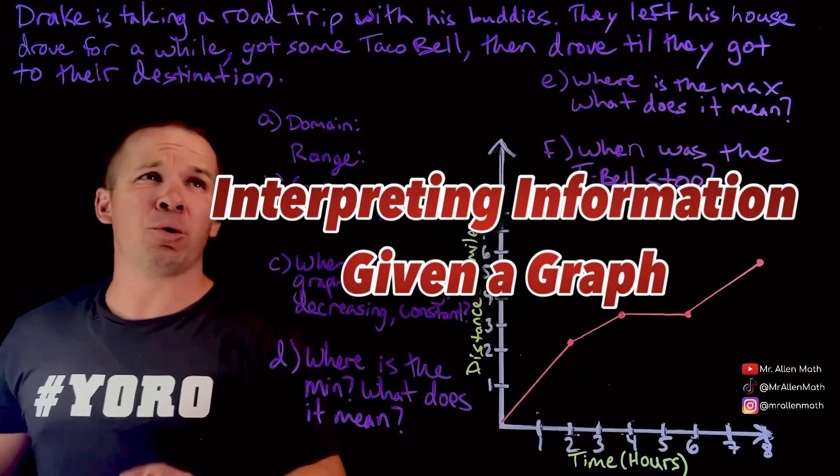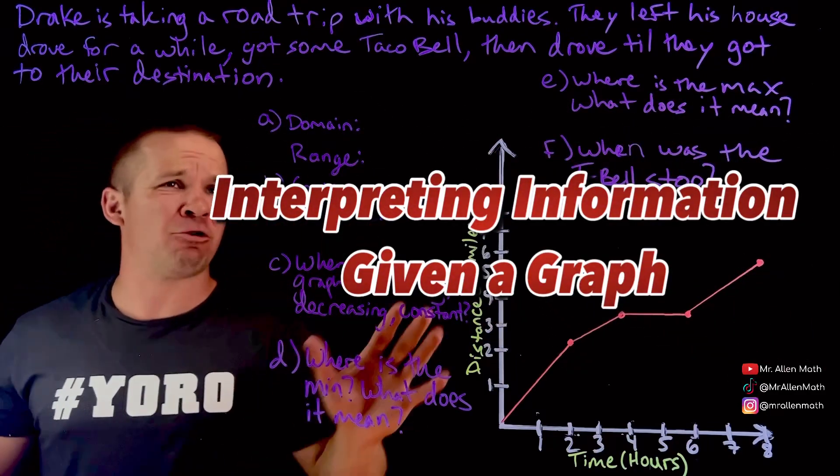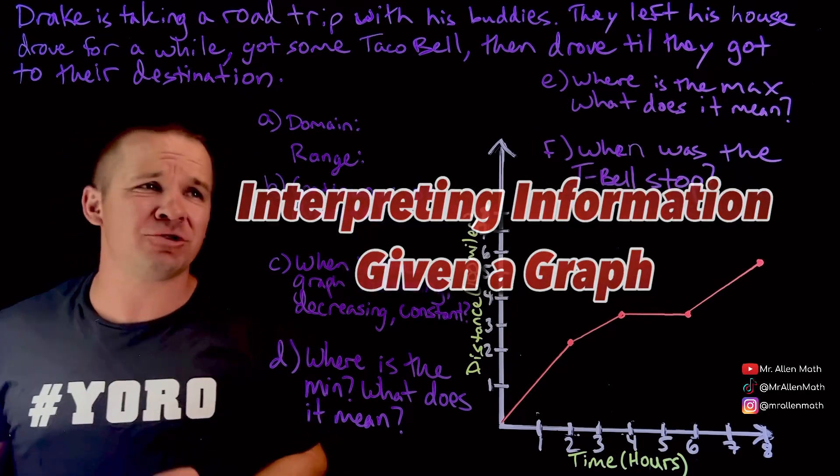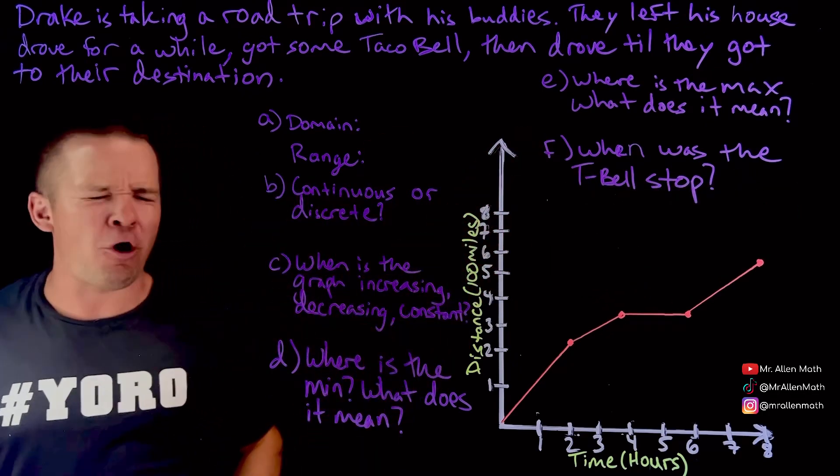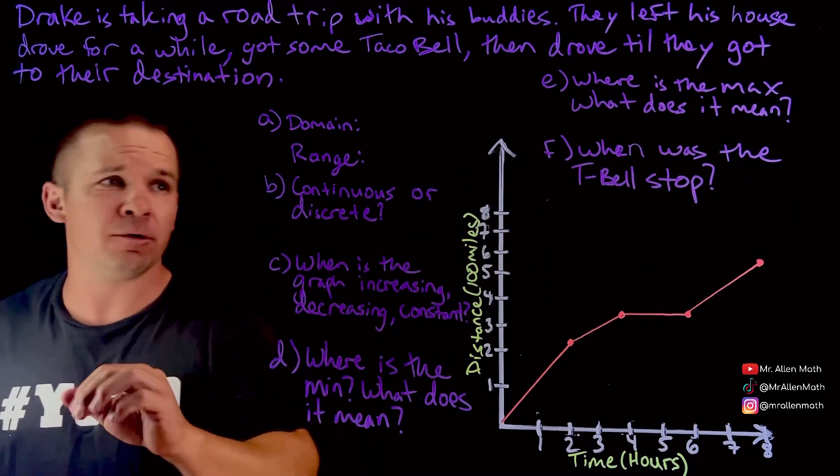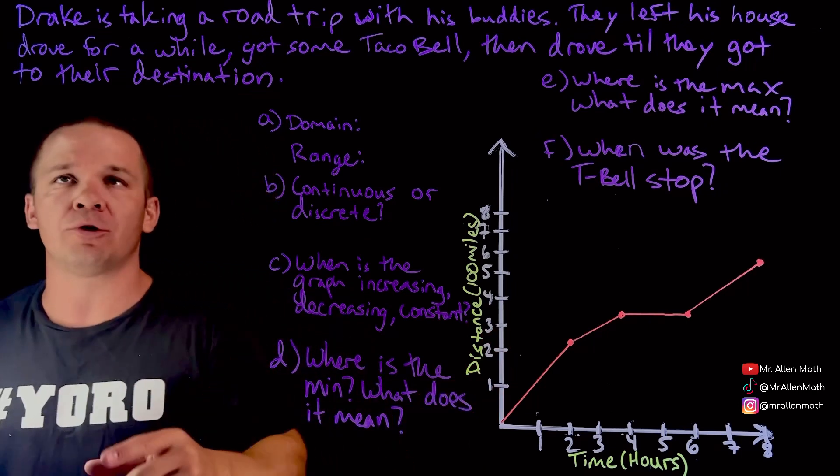What's going on you guys? Mr. Allen here with quite the math problem here. We got graphs, we got celebrity appearances here with Drake, and we got A through F. Oh my goodness! Alright, let's get to it because we don't have a lot of time. Actually, we got all the time in the world.